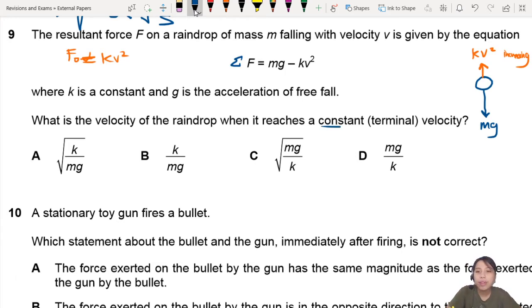Constant terminal velocity, what does that mean? That means you have come to a point where there's no net or resultant force. Why is there no net or resultant force? Because your downwards force equals the upwards force. So net force is 0, acceleration is 0, therefore v is constant.